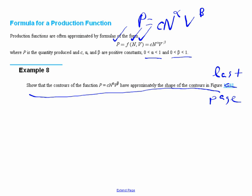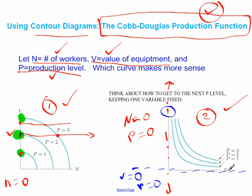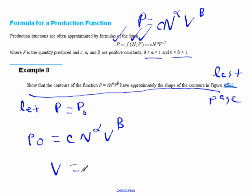So in other words, given this equation here, how can we confirm that it would in fact make a graph that looks like this? Well, remember the idea of a contour line is to set, let p equals some value. So we're going to set it equal to a constant, and we can say, so p-naught equals c n to the alpha v to the beta, and what we want to do is get an equation that's in terms of, we want to have v be considered our dependent and n our independent. So we'll solve for v, we get v equals p-naught over c n to the negative alpha, and then we're going to raise both of those to the one over b.